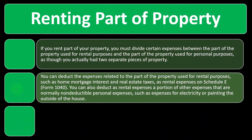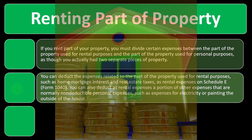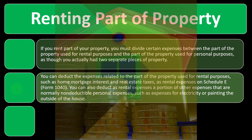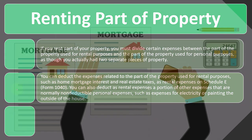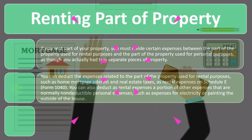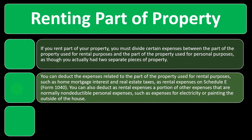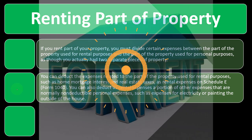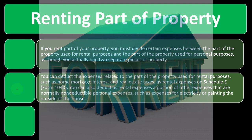You can also deduct as rental expenses a portion of other expenses that are normally non-deductible personal expenses, such as electricity or painting the outside of the house. If you have your own home, you can't deduct personal expenditures like painting — it's a personal expense, not a business expense. But if you rent part of the home, part of the painting process was for the rental portion and therefore possibly deductible on Schedule E.